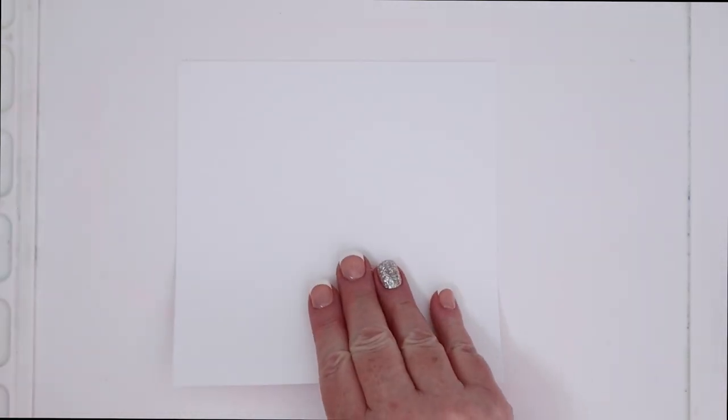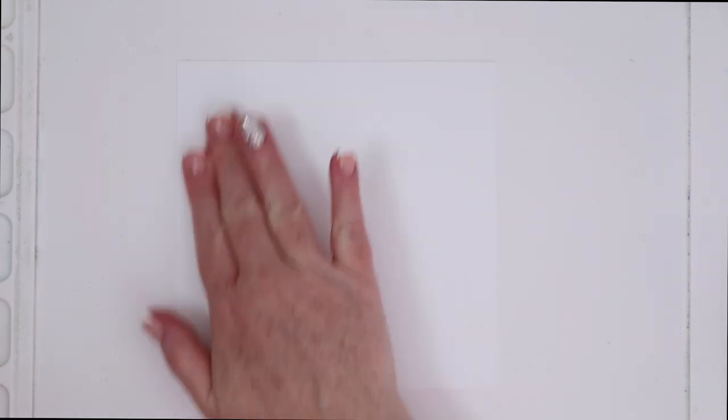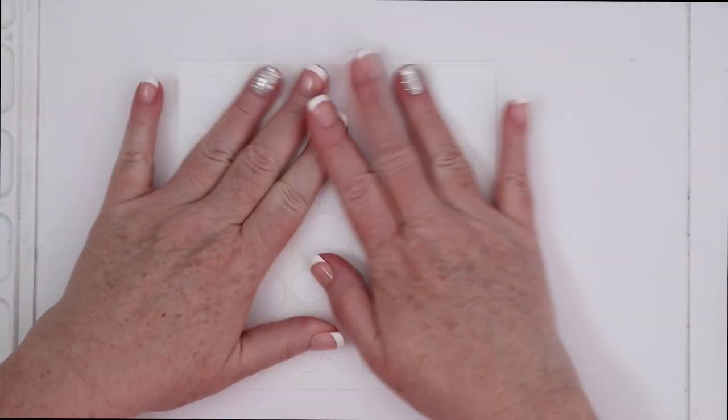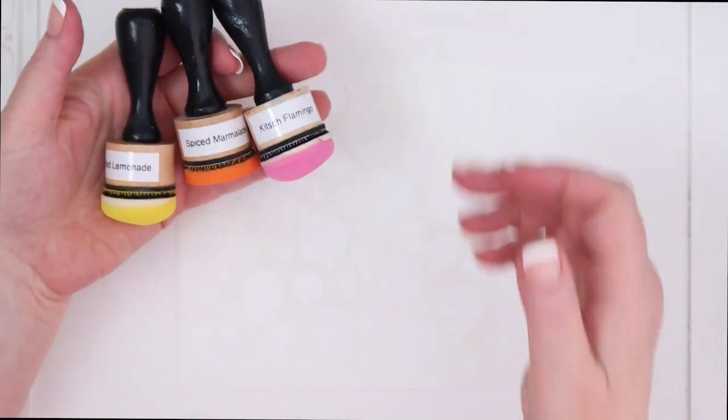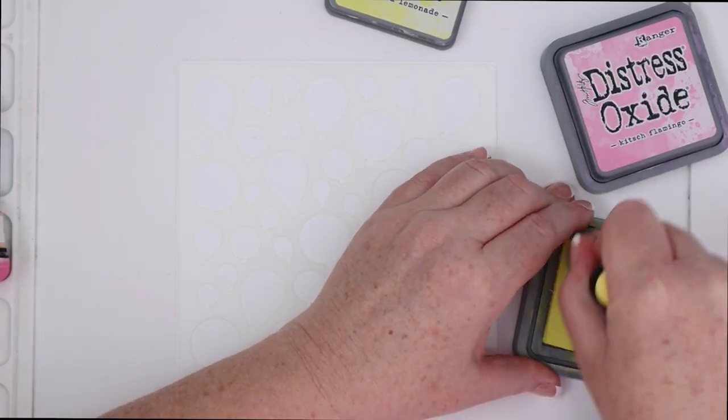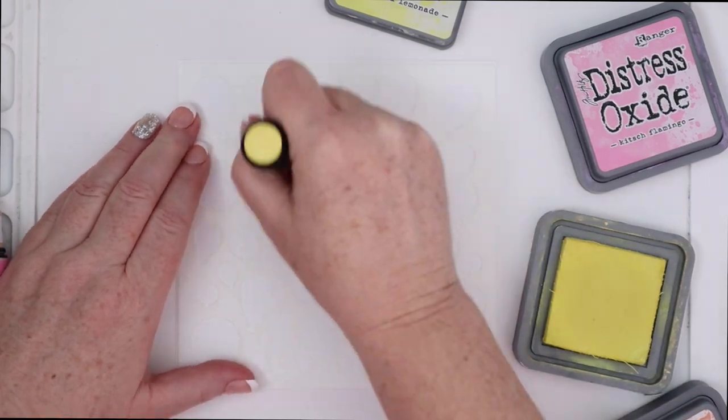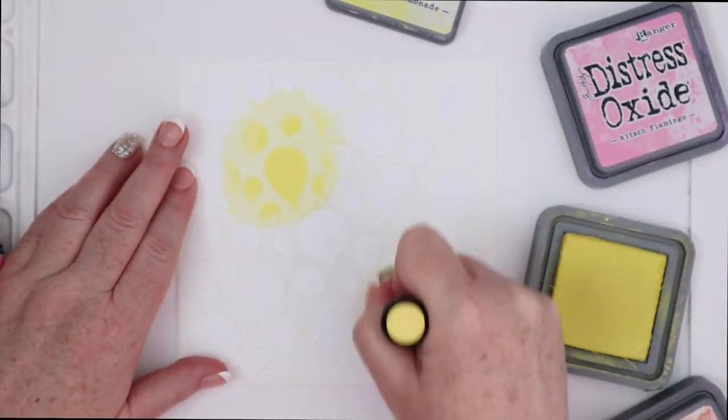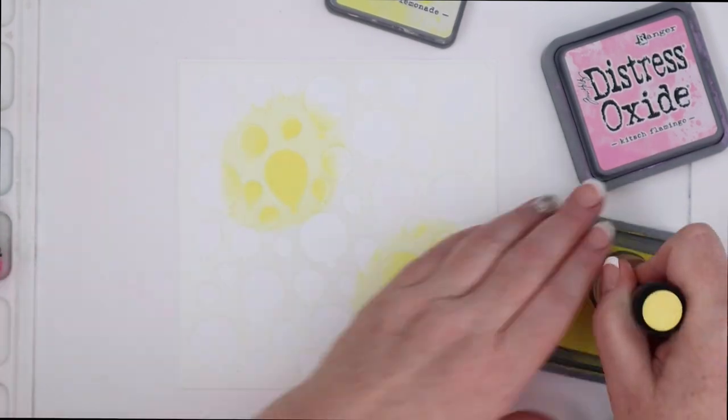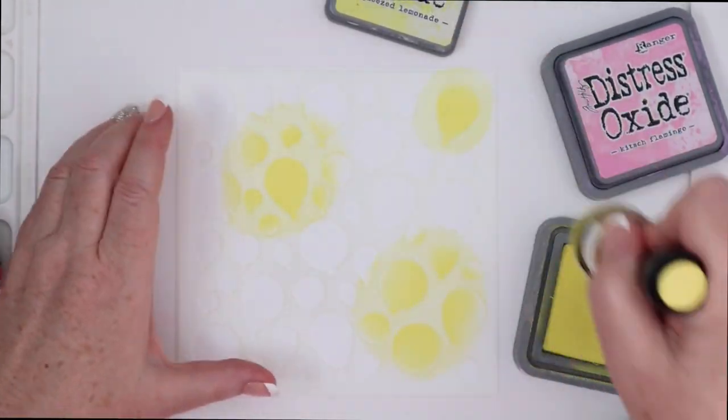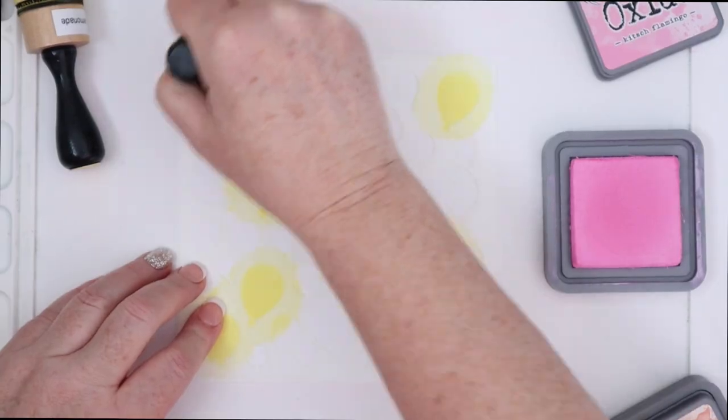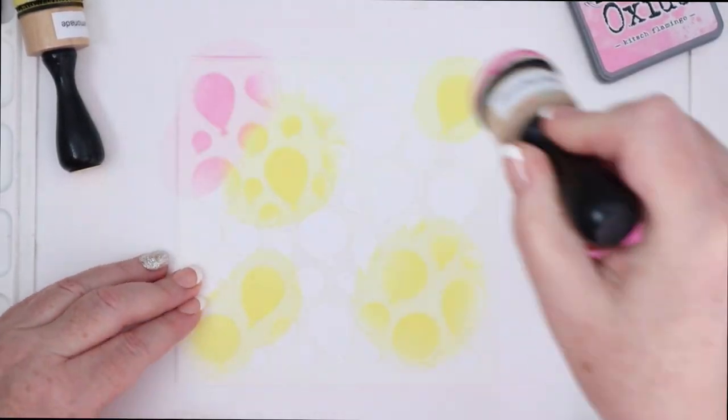Okay, so for the second way of doing this, I'm going to use a stencil called Balloons from Newton's Nook. And this is just one stencil. It's not a layering stencil. I am going to use three colors of Distress Oxide ink and I'm going to put them down in kind of an organic pattern where I'm just putting blobs of color because they're going to blend into each other and create a really beautiful ombre, which I absolutely adore.